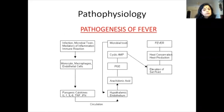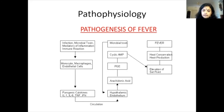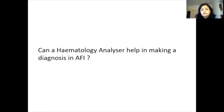In the pathogenesis of fever, when there is an infection, microbial toxins and mediators of inflammation are released, an immune reaction occurs, and monocytes and macrophages come into play. Pyrogenic cytokines are released, and a cascade follows regulated in the hypothalamus. Since all WBC components — lymphocytes, monocytes, and neutrophils — come into play in fever, high-end hematology analyzers can help us in making a diagnosis of acute febrile illnesses.